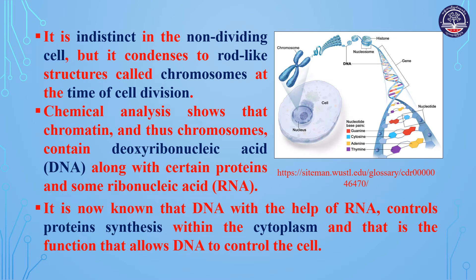Chromatin condenses to rod-like structures called chromosomes at the time of cell division. Chemical analysis shows that chromatin and these chromosomes contain deoxyribonucleic acid — DNA — along with certain proteins and some ribonucleic acid — RNA.